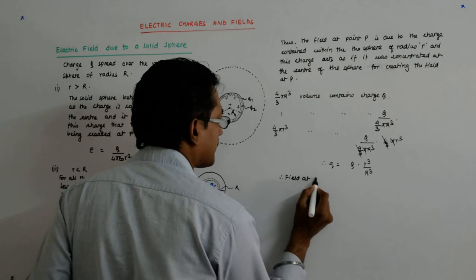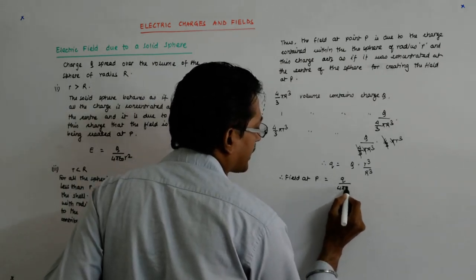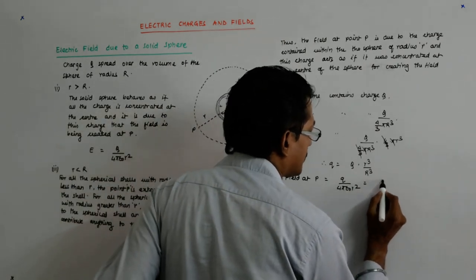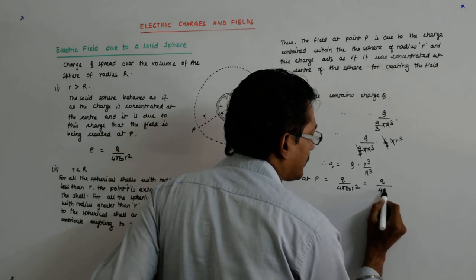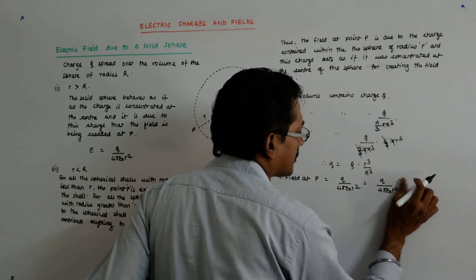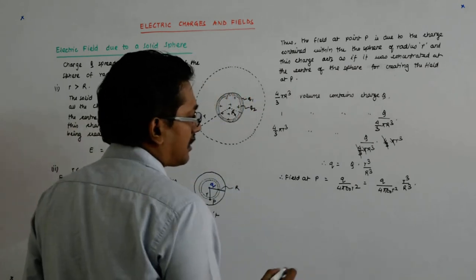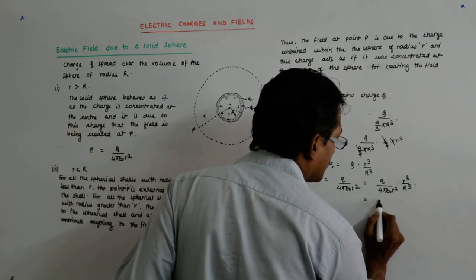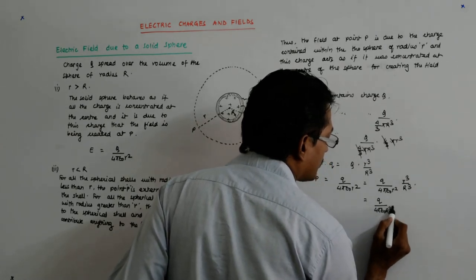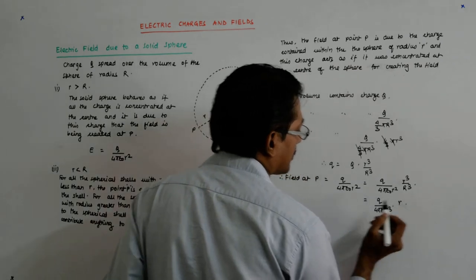This small charge q resides at the center and creates a field at point P, which is at distance small r from the center. So the field at P equals q upon 4π ε₀ r², which becomes Q upon 4π ε₀ R³ times r. So the field inside is proportional to r.